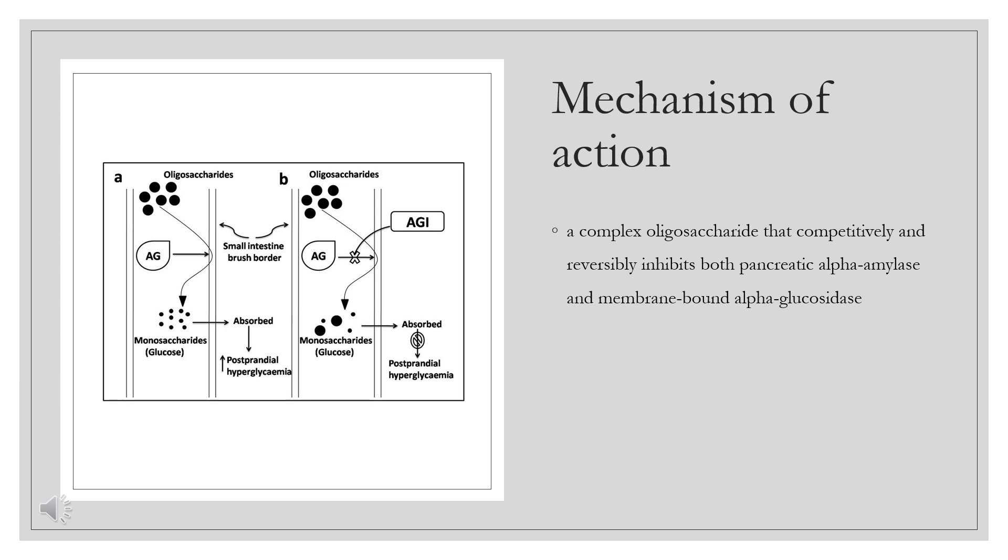Acarbose is a complex oligosaccharide that competitively and reversibly inhibits both pancreatic alpha-amylase and membrane-bound alpha-glucosidases. Of the alpha-glucosidases, inhibitory potency appears to follow a rank order of glucoamylase, sucrase, maltase, isomaltase. By preventing the metabolism and subsequent absorption of dietary carbohydrates, acarbose reduces postprandial blood glucose and insulin levels.